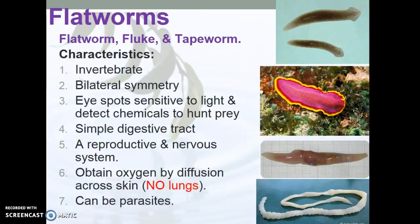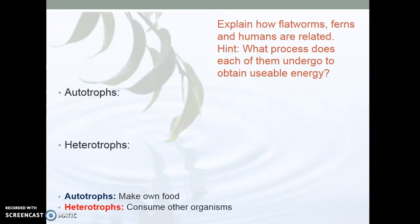Remember, this is the information we talked about before with the flatworms. Explain how flatworms, ferns, and humans are related. We know autotrophs make their own food, and heterotrophs consume other organisms. That means plants are autotrophs. The flatworm and humans are heterotrophs. But they're related because they all need ATP.